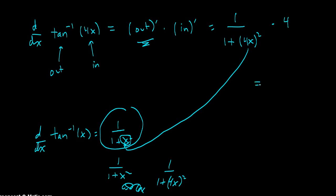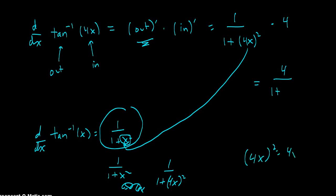Now making this look nice, this is 4 over 1 plus, and here's the significance of the parentheses, 4x quantity squared means 4x times 4x, which is 16x squared.